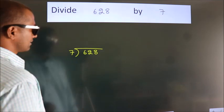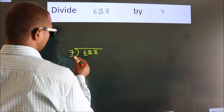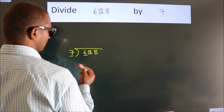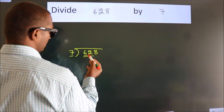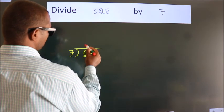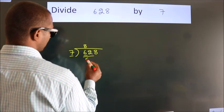Next. Here we have 6, here 7. 6 is smaller than 7, so we should take two numbers: 62. A number close to 62 in the 7 table is 7 times 8, which is 56.